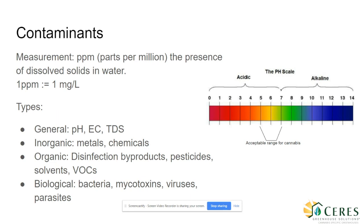pH is used to measure the acidity and alkalinity of a fluid and is measured on a scale from zero — acidic — to 14 — basic. EC, or electroconductivity, is the ability of water to conduct an electrical current. Salinity and total dissolved solids, or TDS, are used to calculate the EC of water, which helps to indicate the water's purity. TDS is a measure of total dissolved solids and is an indication of water's hardness level, which is a measurement of dissolved minerals such as calcium and magnesium in the water.